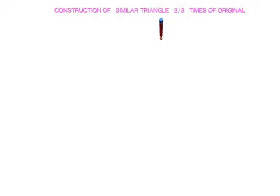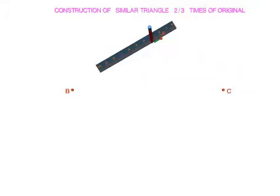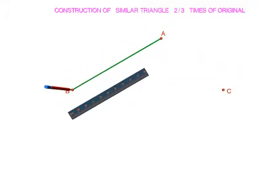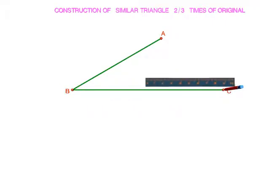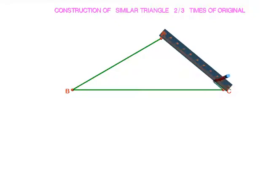Today we are going to learn how to construct a similar triangle to a given triangle which is 2 by 3 times of the original. Let us construct a triangle with any measurement. If the triangle measurements are given, then we have to construct the triangle with the given measurements only.